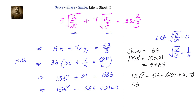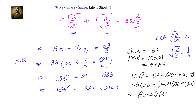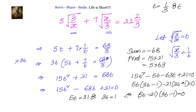Taking 5t common: 5t into 3t minus 1, minus 21 into 3t minus 1 equals to 0. Or we have 5t minus 21 multiplied by 3t minus 1 equals to 0. That gives us 5t equals to 21 or 3t equals to 1, so t equals to 1 by 3 or t equals to 21 divided by 5.